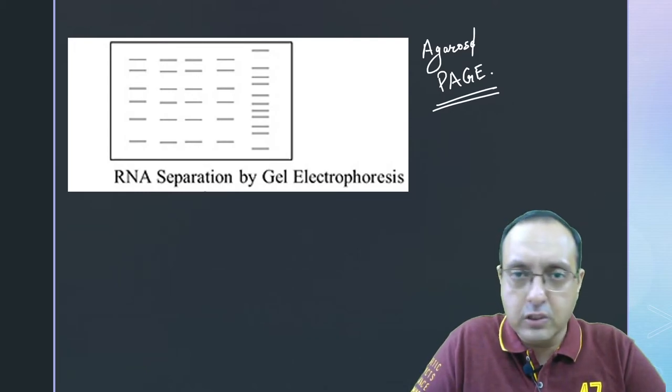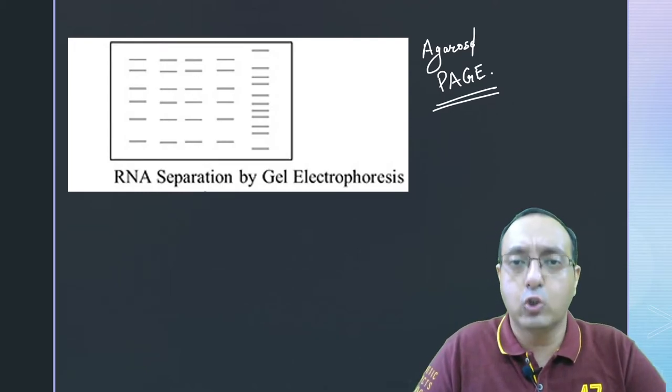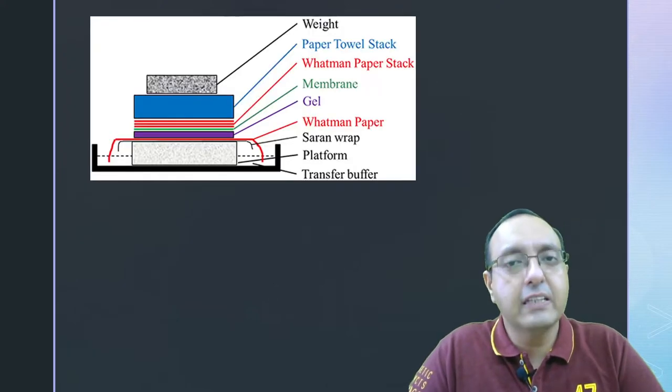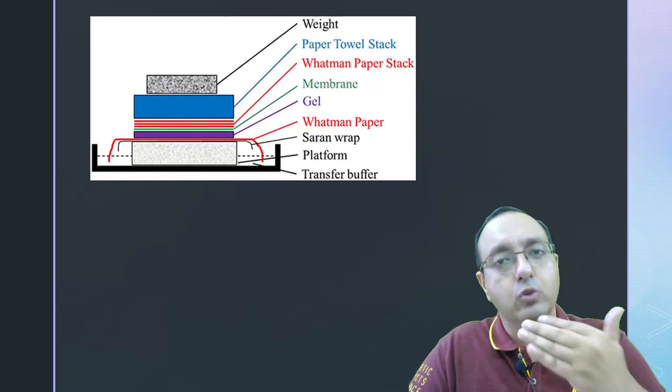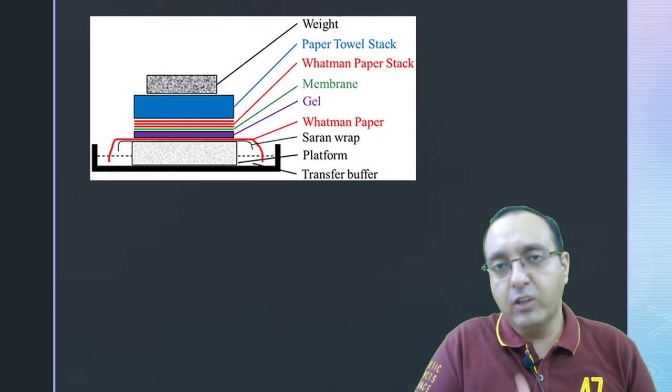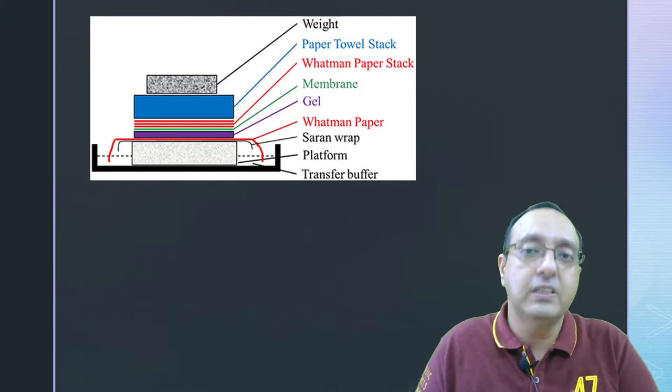Whatever type of electrophoresis we use, we first separate total RNA using gel electrophoresis and then we transfer the RNA from the gel to the membrane because the gel is impermeable to these antibodies or probes. Antibodies in case of Western blotting or probes in case of Northern and Southern blotting.